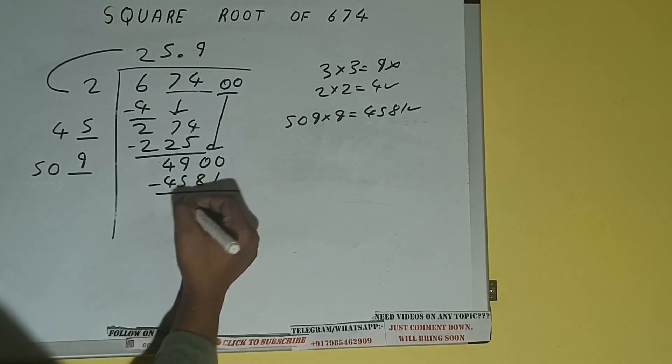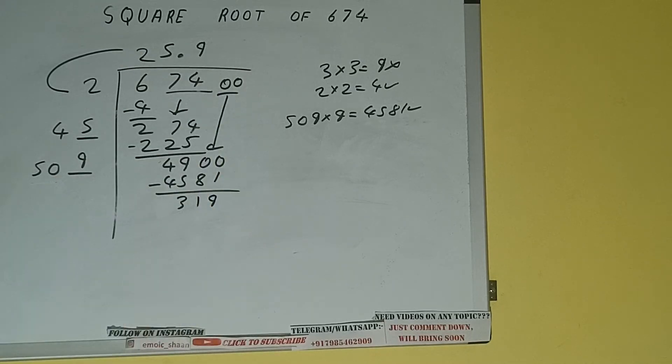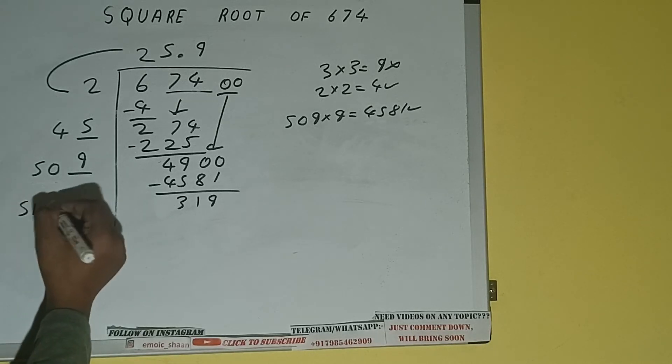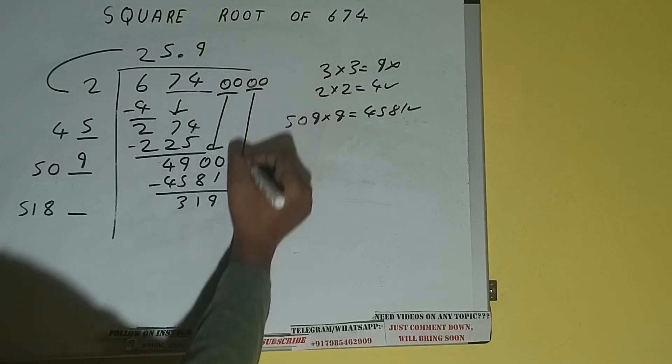And we'll be left with 319. Now 509 into 9, so add both: 509 plus 9 will be 518, and one digit extra.